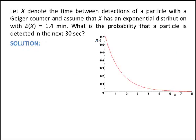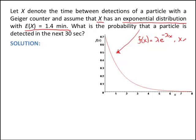Let x denote the time between detections of a particle with a Geiger counter, and assume x has an exponential distribution. You can see the probability density function here of the exponential distribution with a mean of 1.4 minutes. The exponential distribution takes on the form f of x equals lambda e to the negative lambda x for x greater than 0.